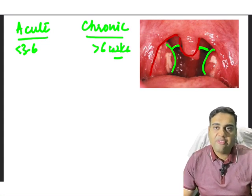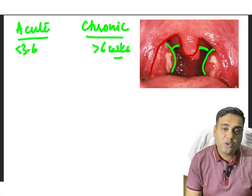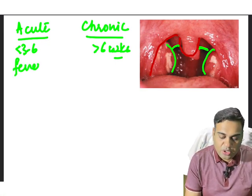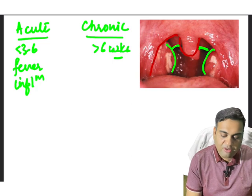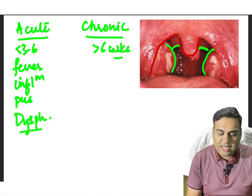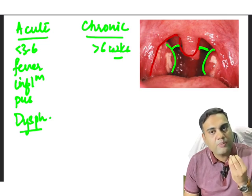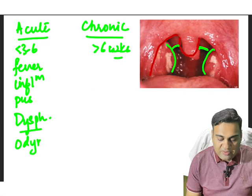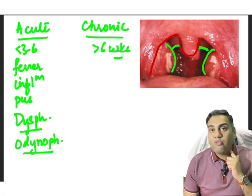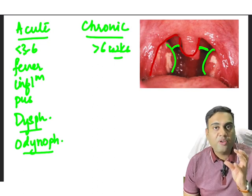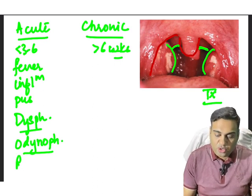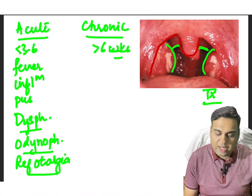In acute tonsillitis there is inflammation, so there are all the signs of inflammation: fever, red tonsils, pus discharge, and the patient cannot eat. Even drinking water is sometimes very painful — this kind of dysphagia is called odynophagia. The sensory nerve supply of the pharynx is the ninth nerve, which also supplies the ear, so the patient will have referred otalgia.